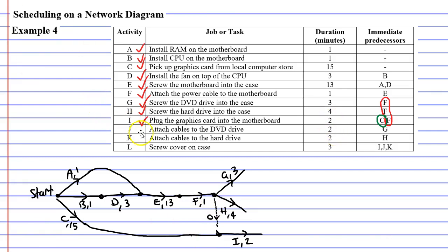Activity J comes after Activity G, so we complete Activity G and Activity J (duration 2 minutes) comes out from that. Then Activity K comes after Activity H — so completing Activity H, Activity K follows. Activity K has a duration of 2 minutes.